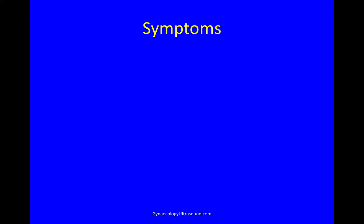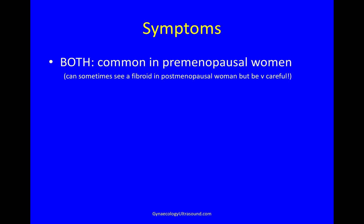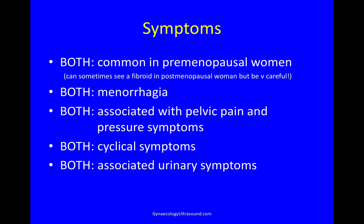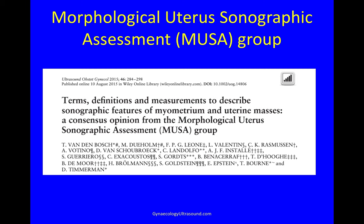Both are common in premenopausal women. You sometimes can see a fibroid in a postmenopausal woman, but you need to be very careful not to be misdiagnosing a malignancy. Both can cause menorrhagia, pelvic pain and pressure symptoms, cyclical symptoms and urinary symptoms. The Morphological Uterus Sonographic Assessment group, MUSA, gave us a common language to describe uterine masses.